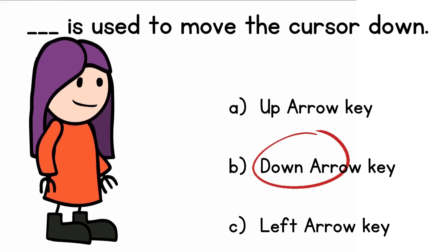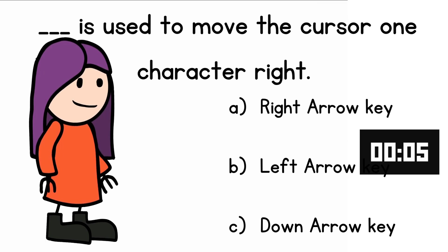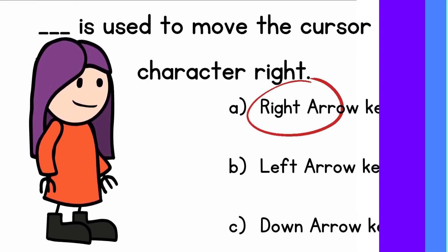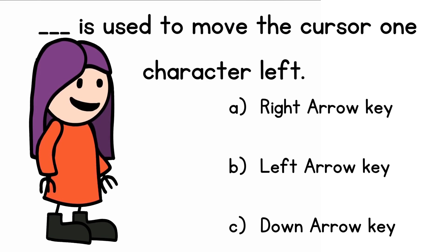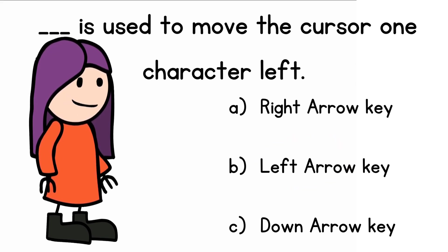The up arrow key is used to send the cursor up. The right arrow key is used to move the cursor one character right. The left arrow key is used to move the cursor one character left.